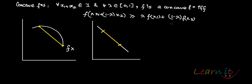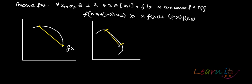On the other hand, if you have a function like this and you pick up any two points and join them by a line segment, and it lies entirely on the function, this becomes an example of a concave function — not strictly concave. And the previous curved example becomes an example of a strictly concave function.